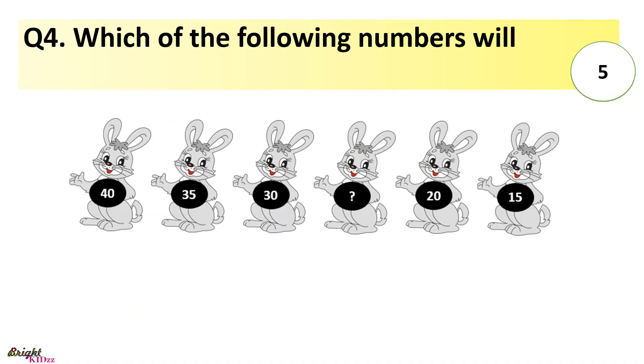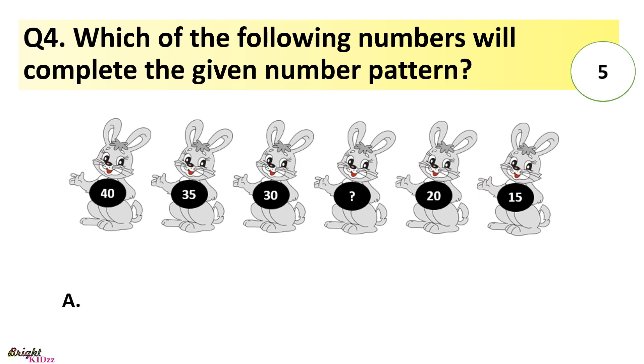Which of the following numbers will complete the given number pattern? 40, 35, 30, dash, 20, 15. A: 22, B: 24, C: 25, 28, D: 25.